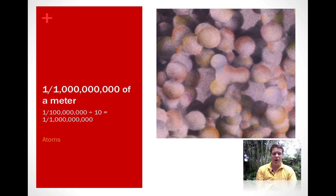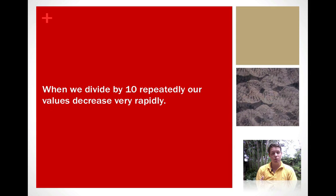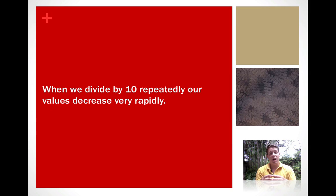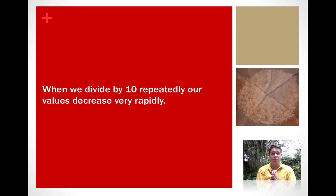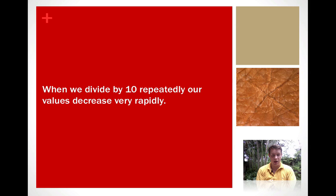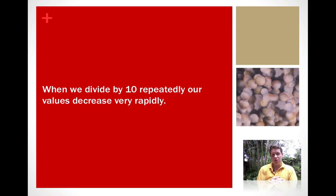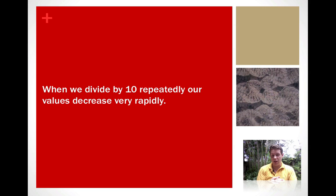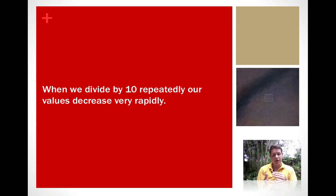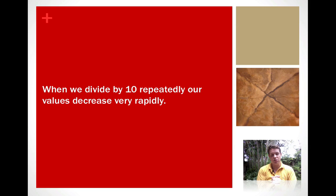So just by dividing by 10 a couple times, we went from seeing a man on a blanket all the way down to the atoms that make that man. So when we divide by 10 repeatedly, our values decrease very rapidly. So in the next video, we're going to see some tricks on dividing by 10, but I decided this time to separate it into two videos.